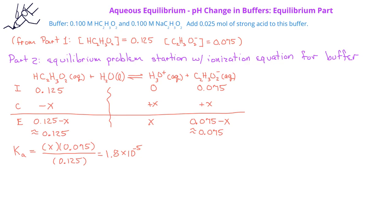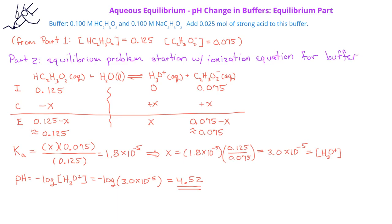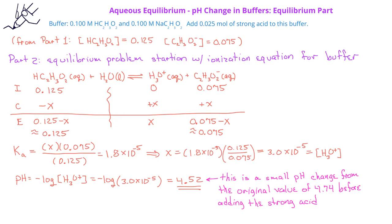We can now plug those equilibrium amounts into our Ka expression. So we have Ka equals x times 0.075 divided by 0.125, which is equal to the Ka for acetic acid, 1.8 times 10 to the minus 5. Solving for x gives us x equals 1.8 times 10⁻⁵ times 0.125 divided by 0.075, which gives a hydronium ion concentration of 3.0 times 10⁻⁵. When we turn this into a pH, we get pH equals negative log of 3.0 times 10⁻⁵, or the pH of this solution after the addition of 0.025 moles of strong acid is 4.52. While this is a small change from the pH of 4.74 before we added the acid, it's still a relatively small change based on the amount of strong acid we added.